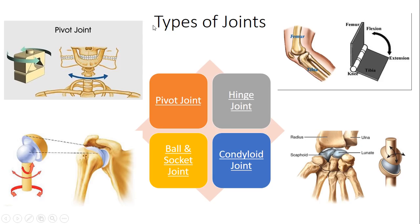As well as different types of bones, there are different types of joints. You need to know these four main types. First, you have a pivot joint - the vertebrae are an example of a pivot joint and they allow for rotation. You also have hinge joints - your knee and your elbow are hinge joints, just like a hinge on a door, and they allow for flexion and extension. For example, if you were kicking a ball, your knee would flex and extend. Same with jabbing in boxing - your elbow would flex and extend.